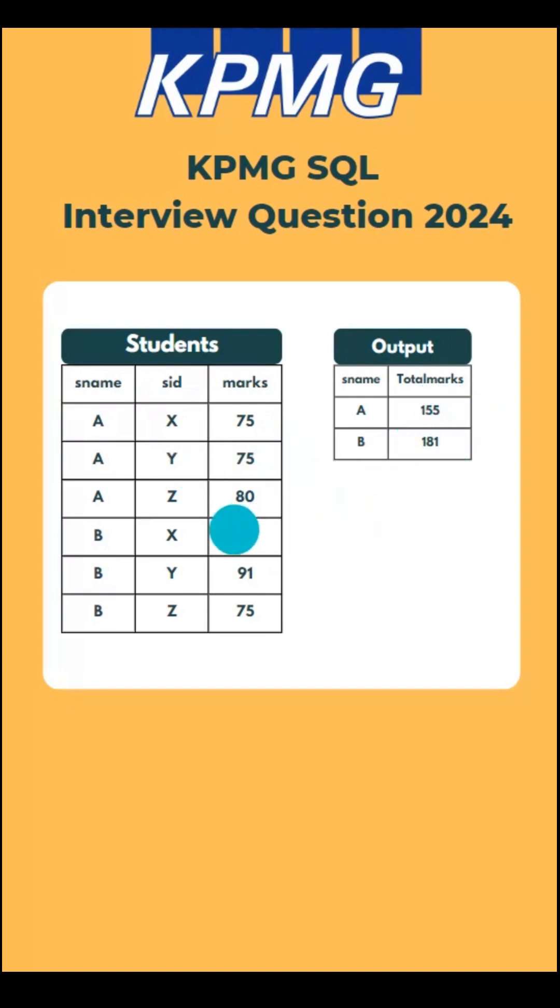And for student B, 90 plus 91, those are the top 2, total is 181. Now let's see how we can solve this.